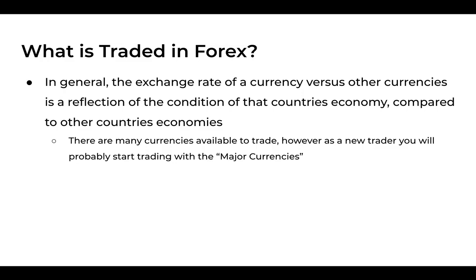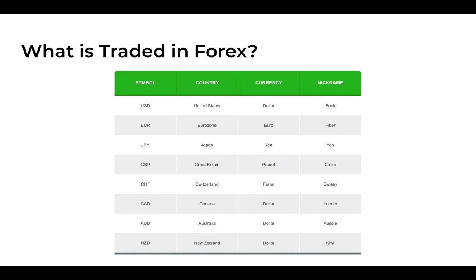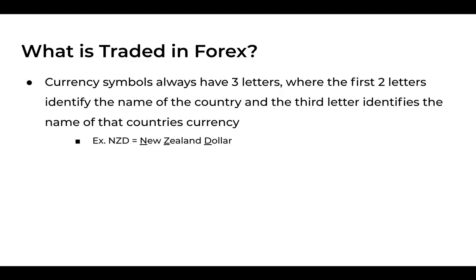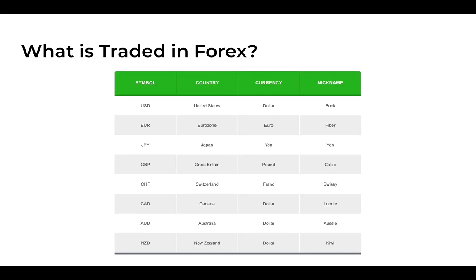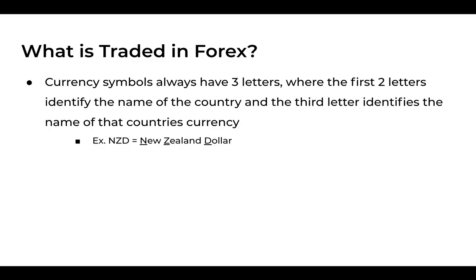There are many currencies available to trade. However, as a new trader, you will most likely start with the major currencies. The major currencies are: USD (United States dollar), euro, JPY (Japanese yen), GBP (British pound), CHF (Swiss franc), CAD (Canadian dollar), AUD (Australian dollar), and NZD (New Zealand dollar). Currency symbols always have three letters — the first two letters identify the country and the third letter identifies the currency. So NZD stands for New Zealand dollar, making these symbols quite easy to understand once you know the convention.